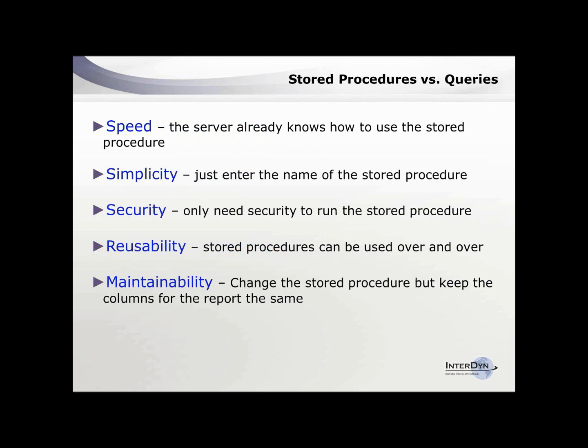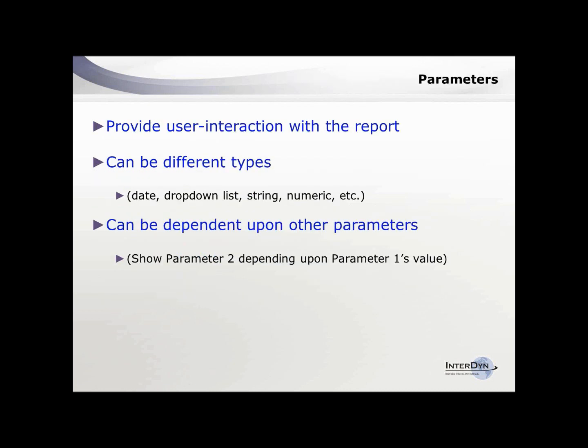The next item is parameters. Parameters are those questions, and they can be different types: dates, drop-down lists, strings, numerics. You can also have parameters dependent upon other parameters — so depending on your answer to the first question, it limits your responses to the second question. You can build a fair amount of intelligence into this.